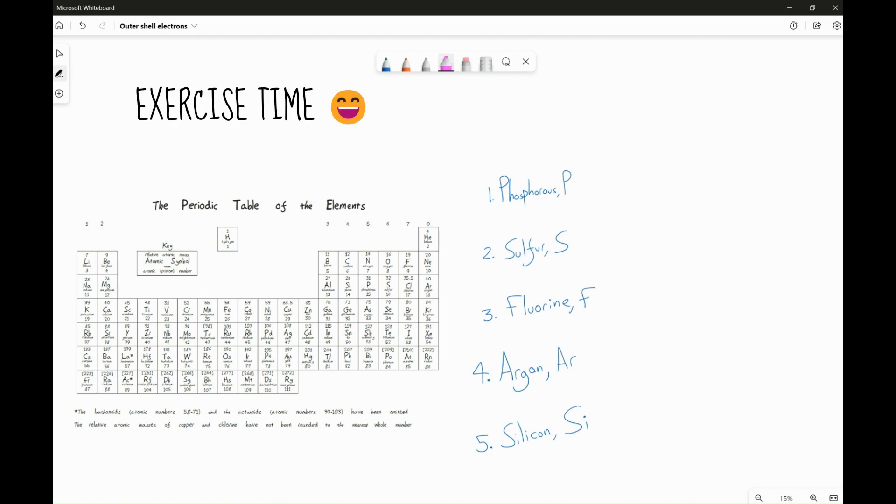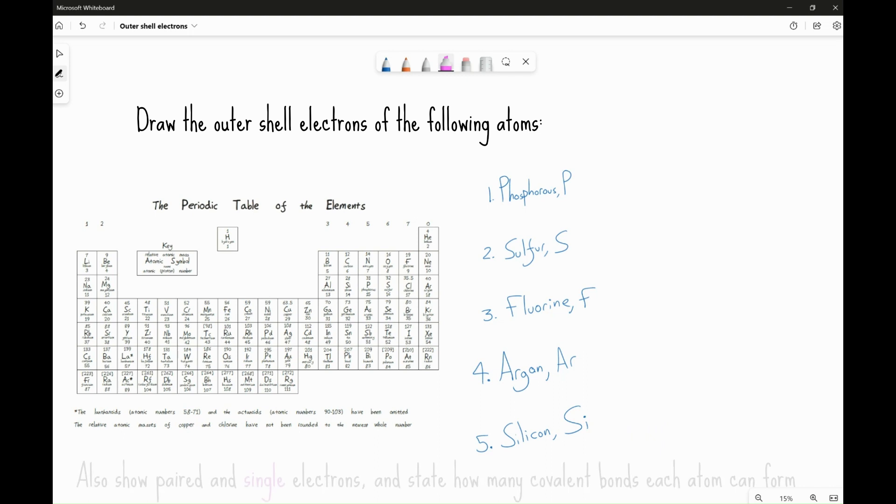Now, let's do an exercise using this periodic table. Draw the outer shell electrons of the following atoms. One, phosphorus, found in group 5. Two, sulfur, found over here, group 6. Three, fluorine, up here in group 7. Then I want you to do argon, number 4. And finally, silicon, group 4. I also want you to indicate paired and single electrons and state how many covalent bonds each of these atoms can form. Pause the video and try the exercises.